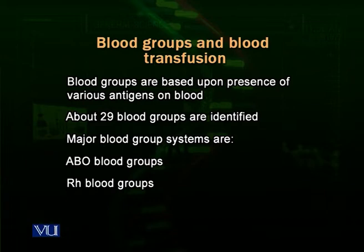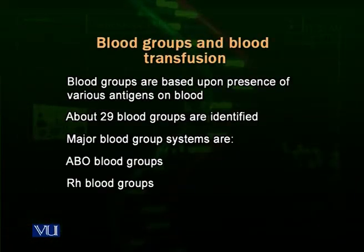Why do we have different blood groups? Because our blood cells have different types of antigens on their surface. Antigens are specific proteins which can cause the release of different types of antibodies. The ABO blood group system is due to two antigens present on the blood cells: antigen A and antigen B.